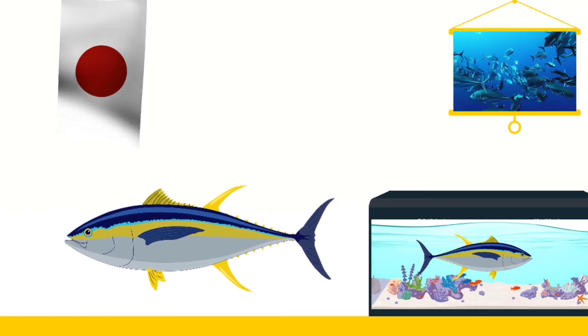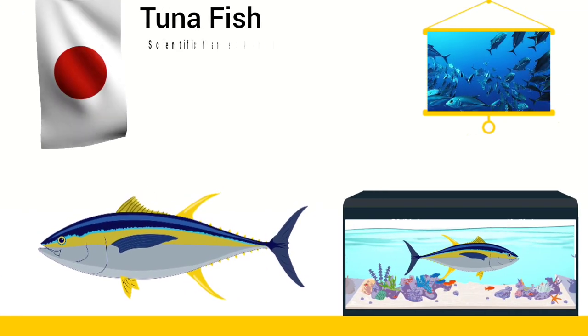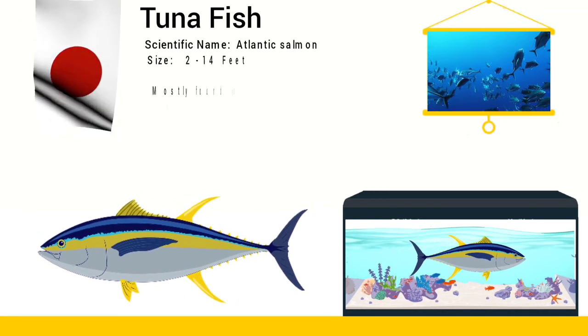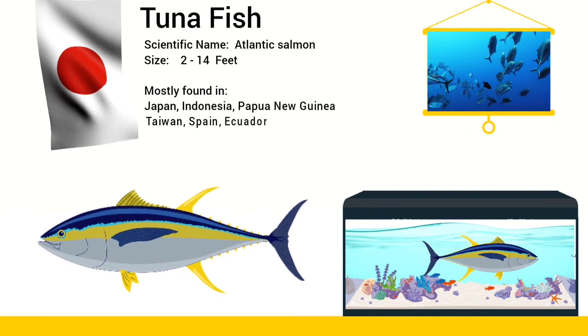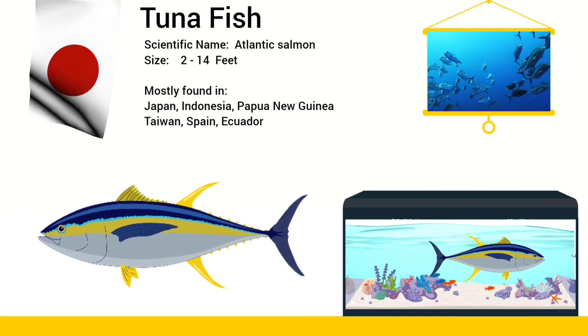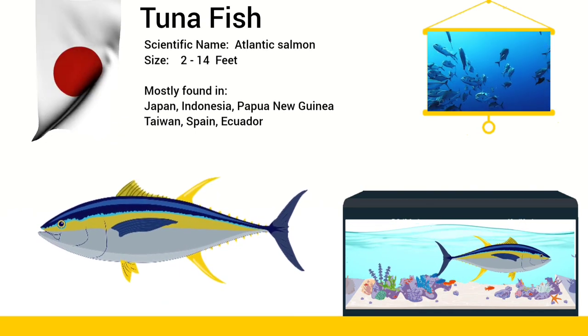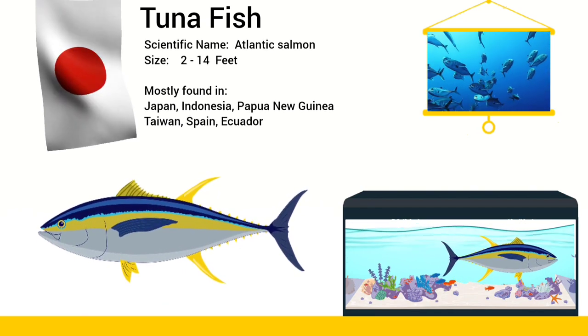Tuna is a sea fish that is found throughout the world's oceans, mainly the Atlantic, Pacific and Southern Oceans.